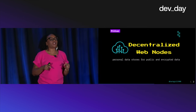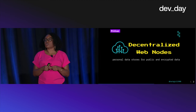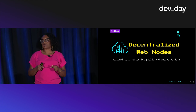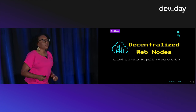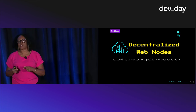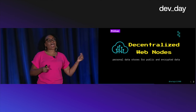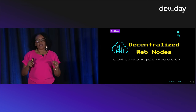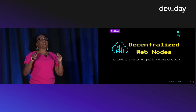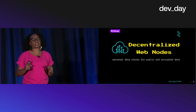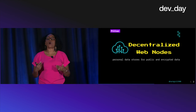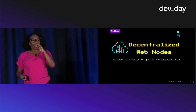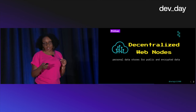The last pillar of Web 5 is decentralized web nodes. Today, centralized entities act as our data stores — all of our content and preferences are stored in these apps' servers. Decentralized web nodes change this by enabling us to decouple our data from the applications we use and instead host our data with us, so we can reuse that data across the web in various applications.